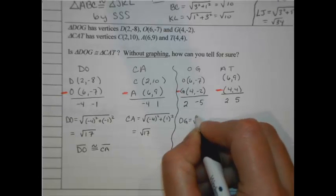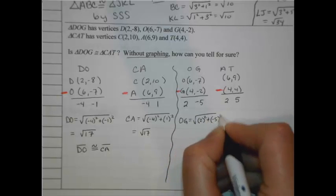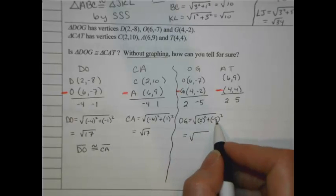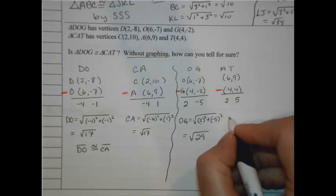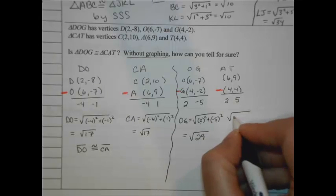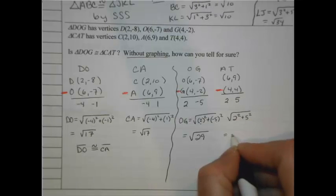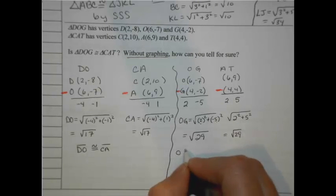So O to G, that's a radical 2 squared plus -5 squared. If we simplify that, 2 squared is 4, and then that's 25 more. So a total of 29 under that radical. AT is going to be the same: 2 squared plus 5 squared. That's still radical 29. Alright, so we have just proven that OG is congruent to AT.